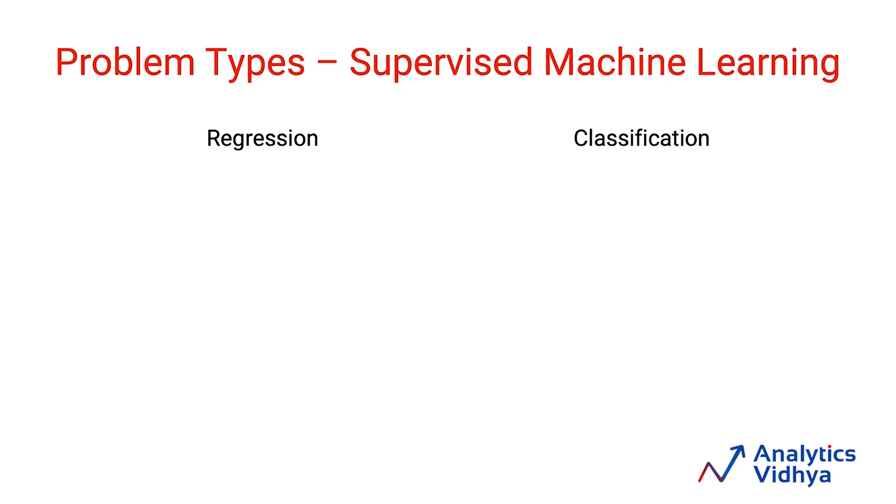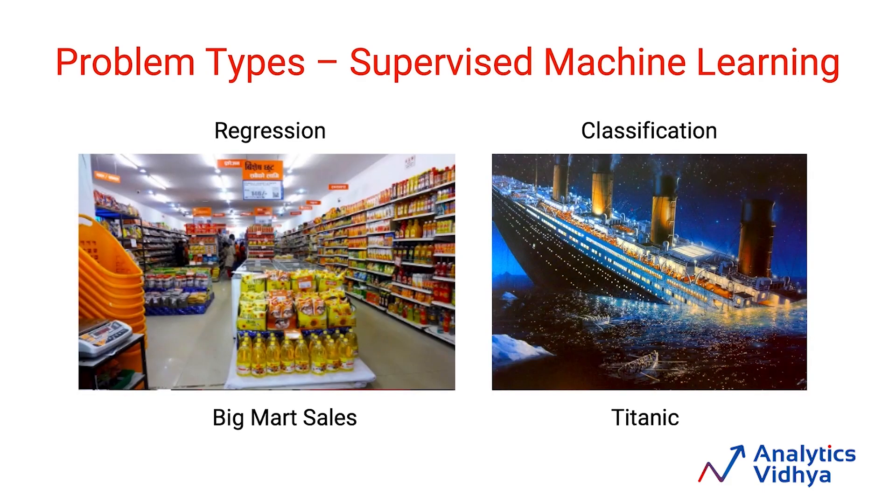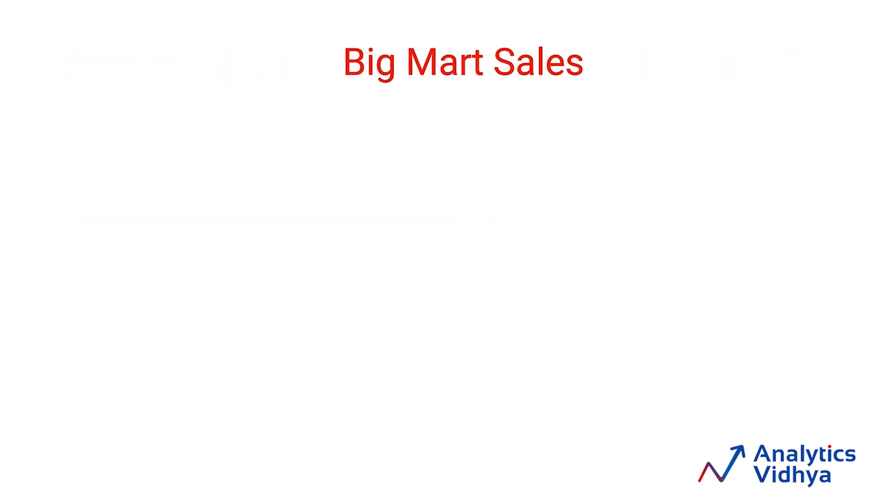As you would know, any supervised machine learning problem can be classified into two types of problem. It could be a regression problem where you are predicting something continuous, for example, sales in a supermart store. Or it could be a classification problem where you divide the outcome into several classes, for example, whether a passenger survived Titanic tragedy or not. So there are only two classes. We'll take each of these types of problems and understand how to create benchmark models. Let's start with regression models.